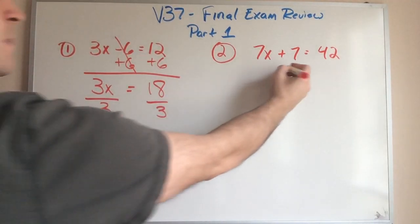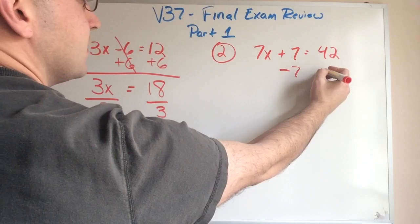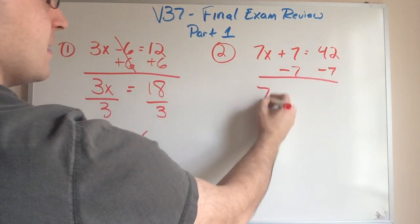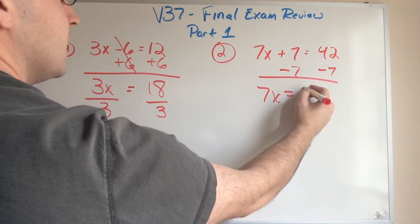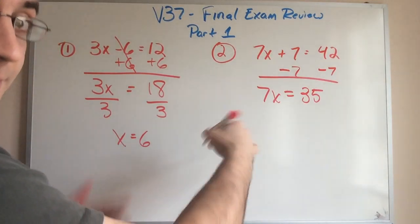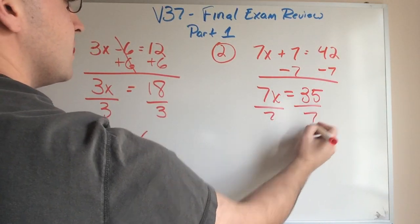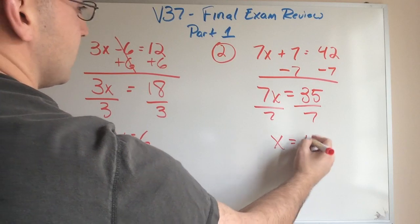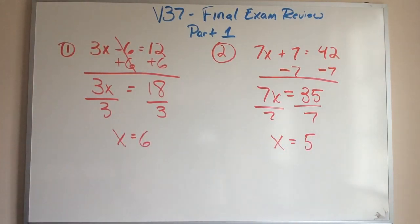Over here, same process, but I'm going to subtract seven instead. Drop down 7X is going to equal 35. And I'm going to do my thing. Divide by seven on both sides. And my answer is going to be X equals five. So two pretty simple ones, right?